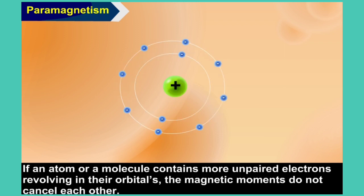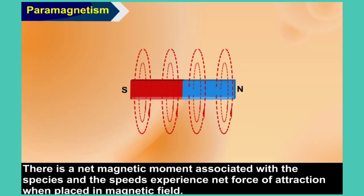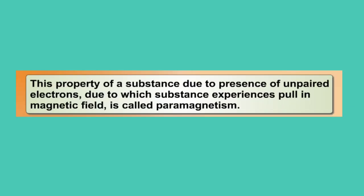Paramagnetism. If an atom or molecule contains unpaired electrons revolving in their orbitals, the magnetic moments do not cancel each other. There is a net magnetic moment associated with the species, and the species experiences a net force of attraction when placed in a magnetic field. This property of a substance due to the presence of unpaired electrons, by which the substance experiences a pull in a magnetic field, is called paramagnetism.